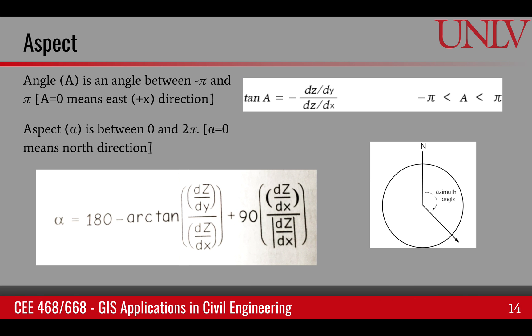The aspect can be calculated in a similar way as described earlier. I want to point out here, as I said earlier, the angle A is relative to x-direction in the counterclockwise direction, whereas aspect is an angle relative to north direction, and it goes from 0 to 2 pi. So alpha 0 means north direction, and A 0 means the positive x-axis.